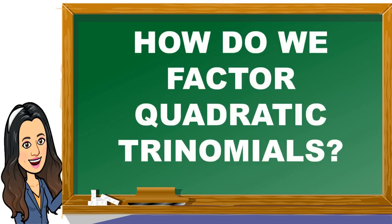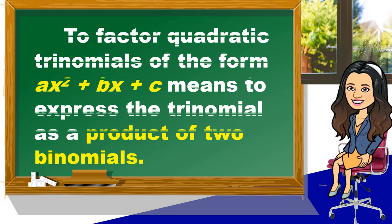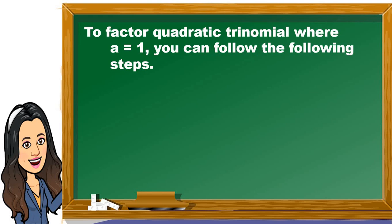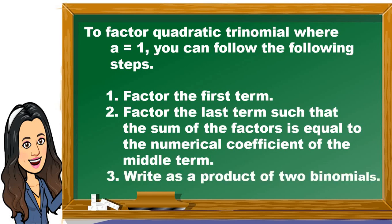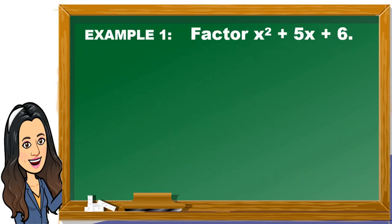Now the question is: how do you factor quadratic trinomials? To factor quadratic trinomials of the form ax squared plus bx plus c means to express the trinomial as a product of two binomials. Here are the steps when the value of a is equal to 1. Step 1: factor the first term. Step 2: factor the last term such that the sum of the factors is equal to the numerical coefficient of the middle term. Step 3: write as a product of two binomials.